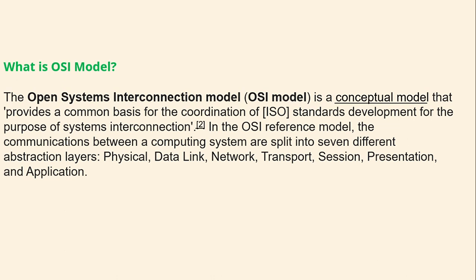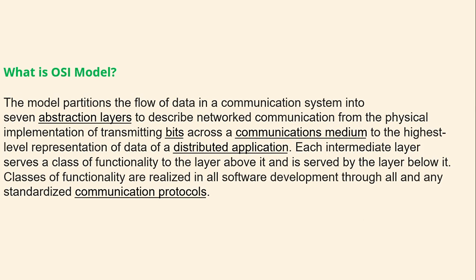In the OSI reference model, communication between computing systems is split into seven different abstraction layers: physical, data link, network, transport, session, presentation, and application. The model partitions data flow into seven abstraction layers, from the physical transmission of bits across a medium to the highest-level representation of data in a distributed application. Each intermediate layer serves a class of functionality to the layer above it and is served by the layer below it. These classes of functionality are realized through standardized communication protocols.